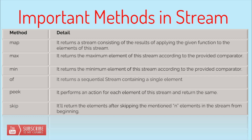The of method is used to generate a sequential stream from a list or array — Stream.of results in a sequential stream containing single elements. peek performs an action for each element of the stream and returns the same stream. Unlike map, where you may need additional statements to return the whole object after changes, with peek you don't need to return it — it is automatically returned. skip returns all elements of the stream after skipping the specified number of elements from the beginning. For example, skip(3) skips the first three elements and returns the stream starting from the fourth element.